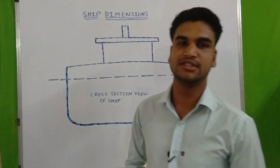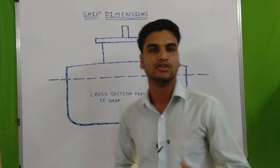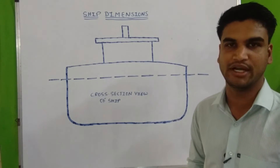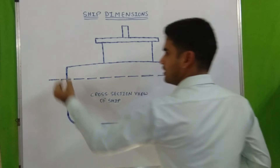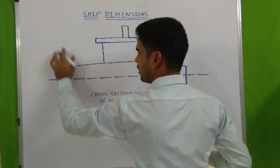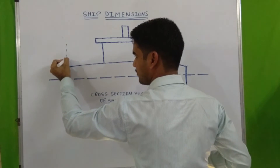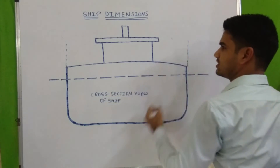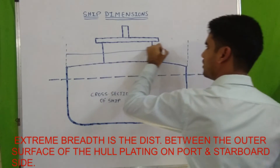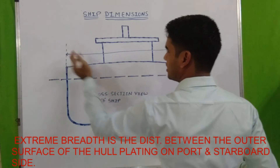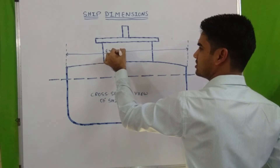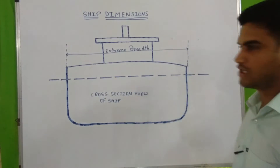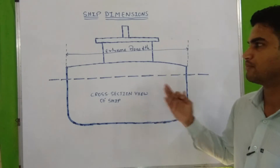Some dimensions are measured transversely and vertically. First is extreme breadth. Extreme breadth means the distance between the outer surface of hull plating on port and starboard side. It is actually measured at the midship point, measured transversely, and it is used for berthing and maneuvering of the ship.